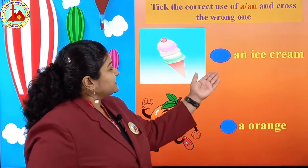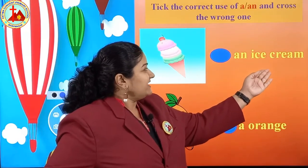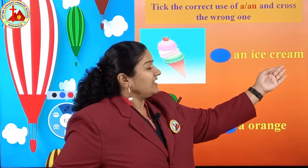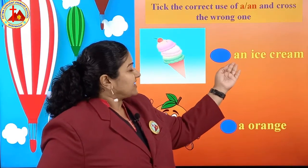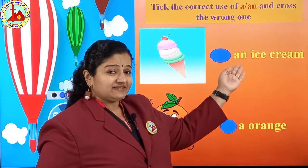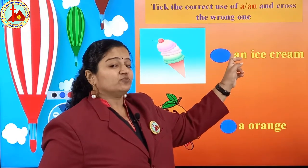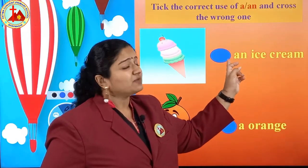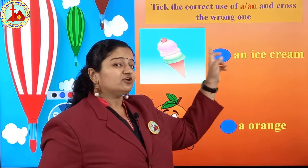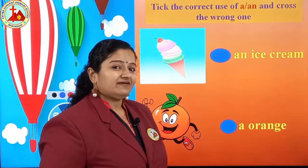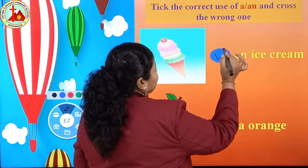Next picture is ice cream. I, C, E, C, R, E, A, M — ice cream. Before ice cream, AN is written. I is the first letter and I is a vowel. So this sentence is right: an ice cream. Put a tick mark.